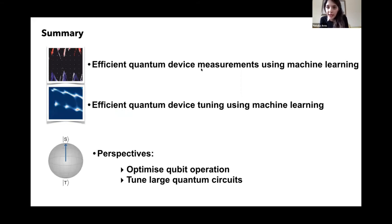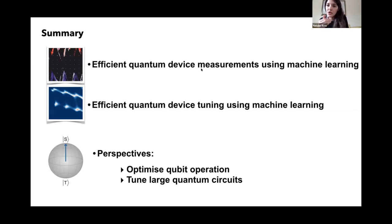We do train a neural network from scratch and it takes around an hour. But once you train it, it's done for different devices. We trained it mostly on simulations, and then a very small set of real data — just to capture some features that real data has that simulations don't. We train it once and then the algorithm works fine for different devices, and we have verified this.